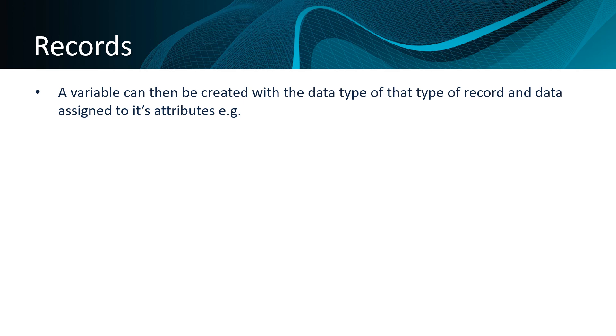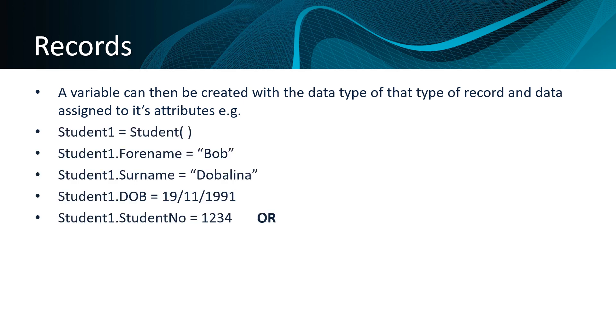This may be, as in the case of the first example here, where we have the student1 variable being created and a record being assigned to it that's blank and then using dot notation to assign values to it. Or it may be that the values are passed in as parameters when we create the record. Dot notation is also how we access elements of a record. And records themselves can be elements in an array so that we can store a group of records together.